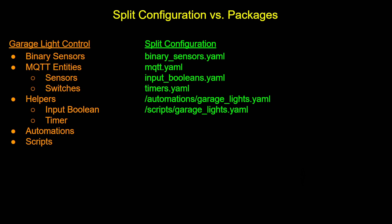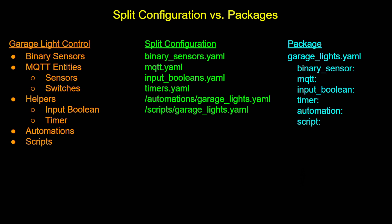This is where packages can be really handy. When I use a package, I can define a single YAML file — say, garage_lights.yaml — and I can include all these different types of integrations or entities in a single file. So I can have binary sensors mixed in with MQTT sensors, and I can have all my helpers and my automations and scripts all in one big file.